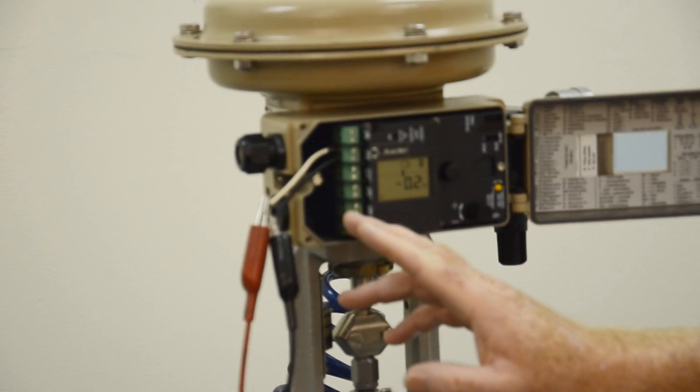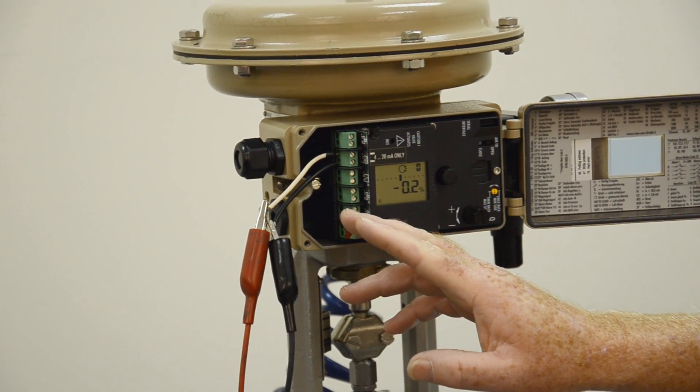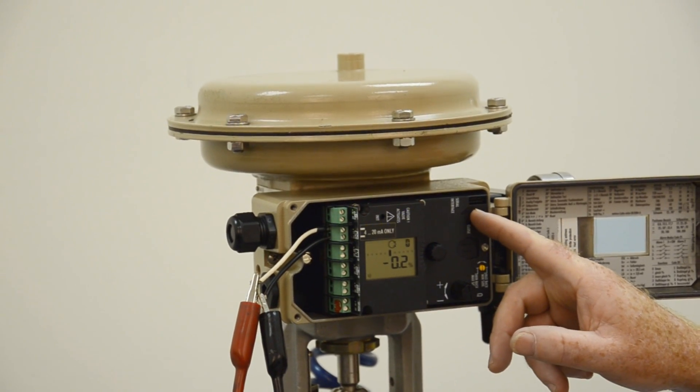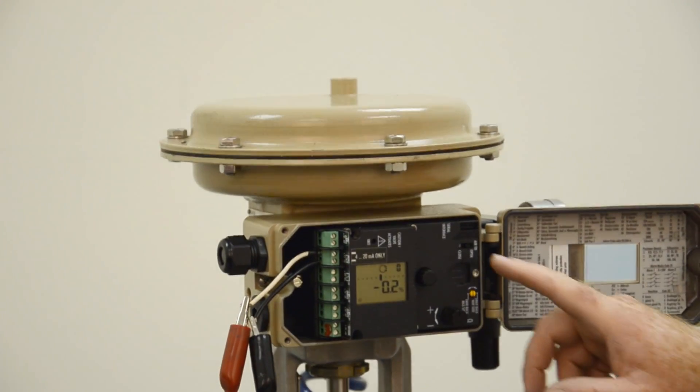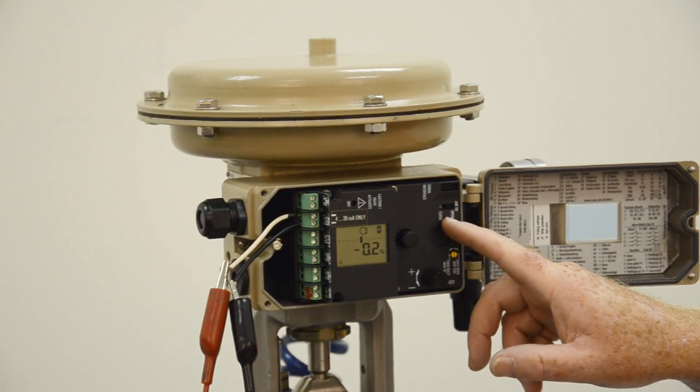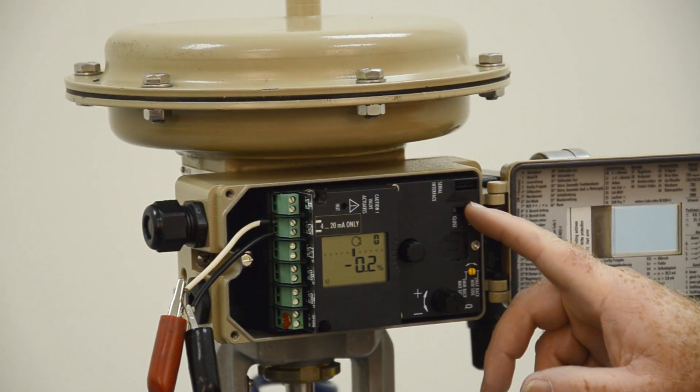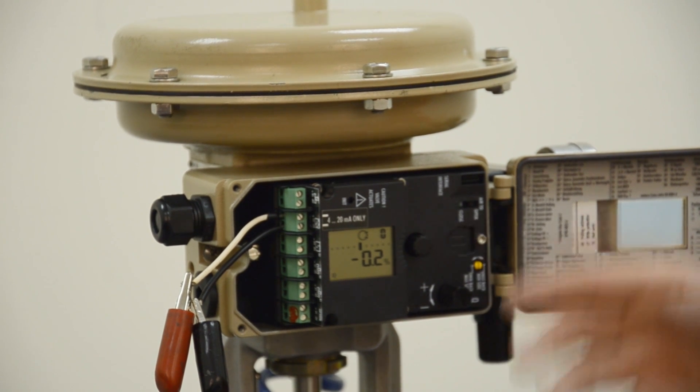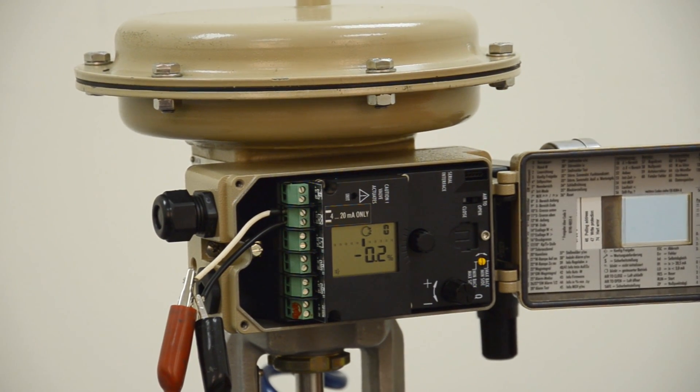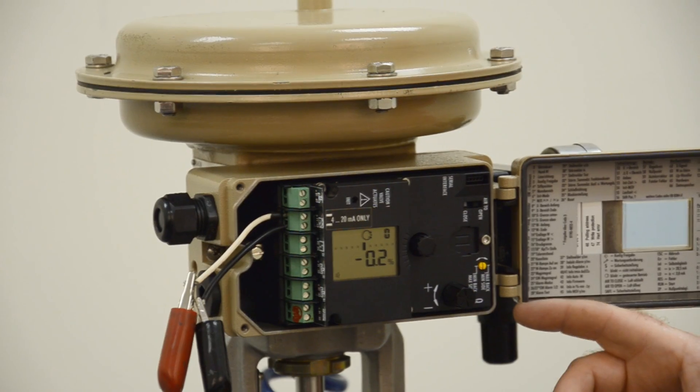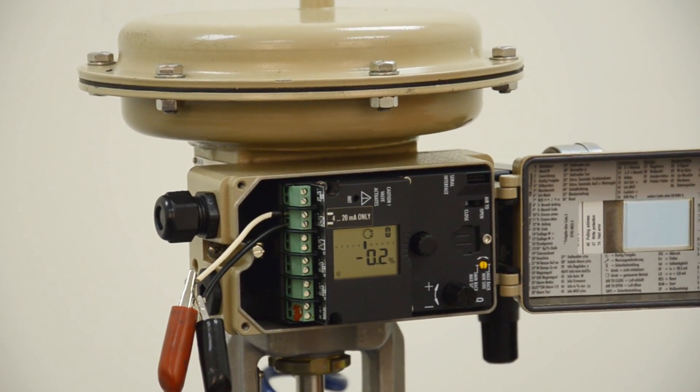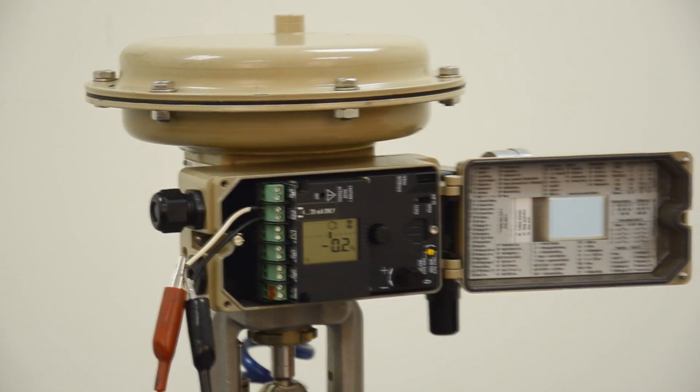And this can be done through what we call a rotary push button. First off, on the positioner, you will see your terminal board, your display. There's a serial interface connection. There is an air to open or air to close switch, which you will need to move to the proper position based on your failed position of your valve. Once you've done that, then you are ready to start configuration.